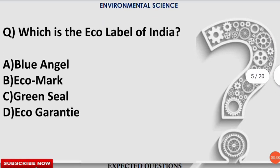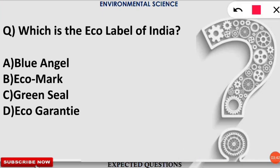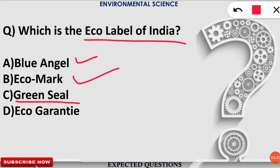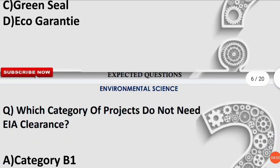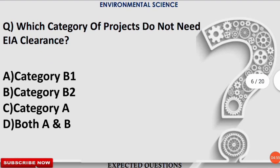The next question: which is the eco-label of India? The correct option is B — Eco Mark is the eco-label of India. Blue Angel is the eco-mark for Germany. Green Seal is a US member and co-founder of the Global Eco Labeling Network (GEN). Eco Guarantee is a non-profit organization that provides non-GMO and biodegradable labels.